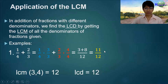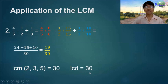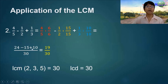The answer is 11/12. Example 2: denominators 2 and 3 give an LCM of 30, so the LCD is 30. We raise the fractions to higher terms with the LCD of 30, then compute: 24 minus 15 plus 10 equals 19/30.